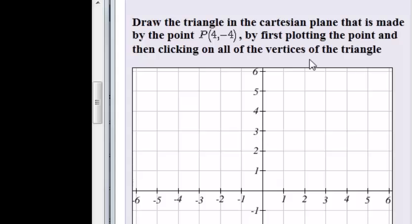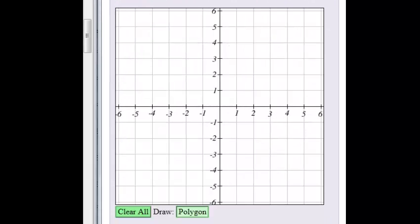The vertex of the triangle talks about the corners or the angles of that triangle. So first let's plot the point. We have the point 4, negative 4. So x is 4, y is negative 4. That's the one point.